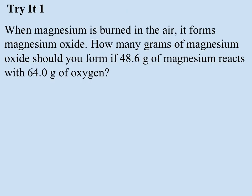So here's a try it. When magnesium is burned in the air, it forms magnesium oxide. How many grams of magnesium oxide should you form if 48.6 grams of magnesium reacts with 64 grams of oxygen? So your first step is to write a balanced equation, and then you need to convert your grams of each reactant to moles of each reactant. And then finally, you need to predict how much magnesium oxide would form from each reactant. I'd encourage you to pause and try this and see how much you can do on your own.